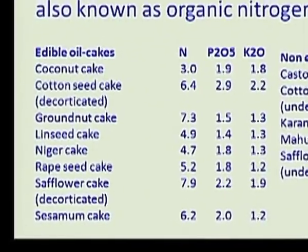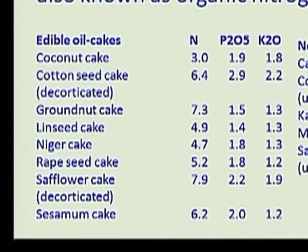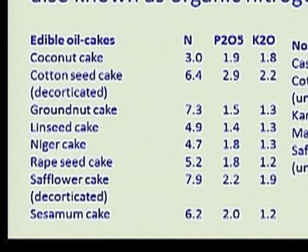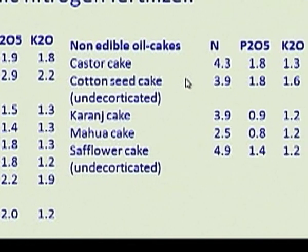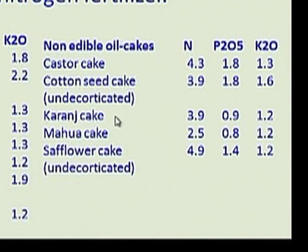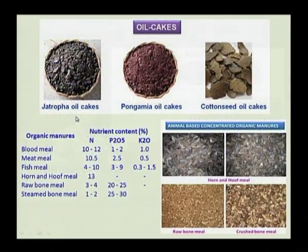Important edible oil cakes are coconut cake, cotton seed cake, groundnut cake, linseed cake, niger cake, rapeseed cake, safflower cake, and sesame cake. Some non-edible cakes are also used for green manuring, like castor cake, cotton seed cake, karanj cake, mahua cake, and safflower cake. The nutrient content of different oil cakes differs by type.